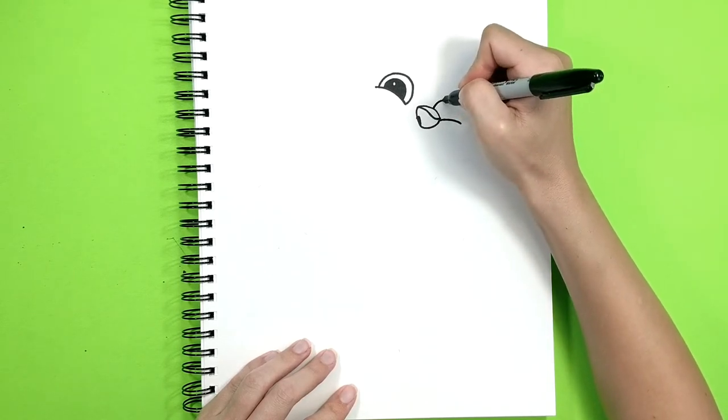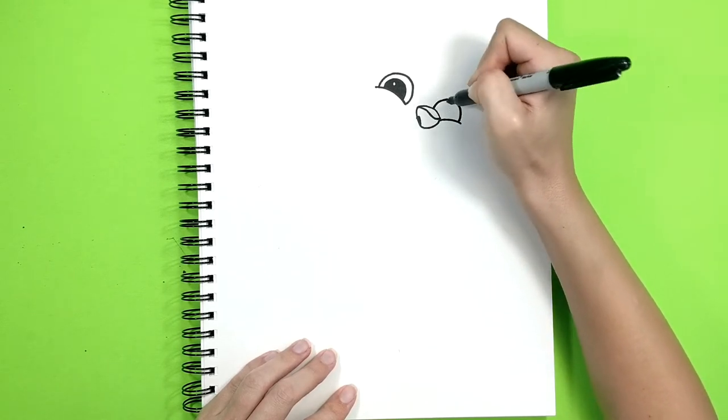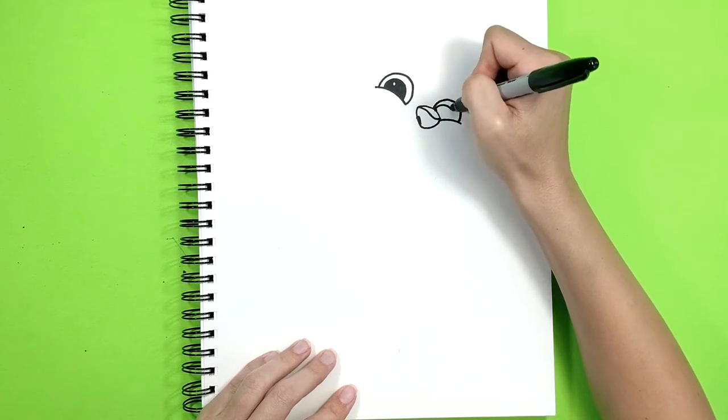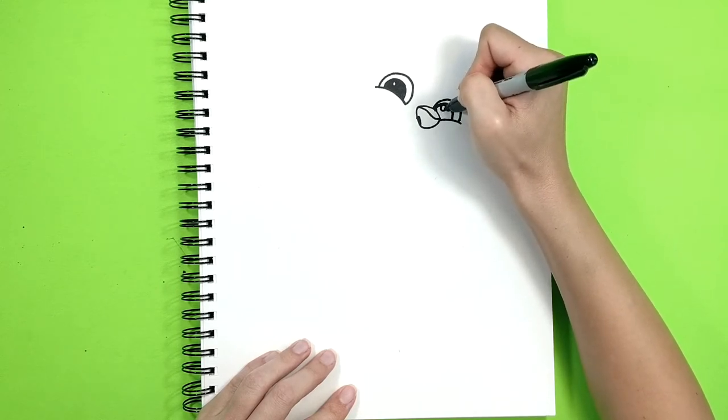Draw this half circle, another half circle right there. Maybe a little bit there. Here we go, and a little circle in the middle.